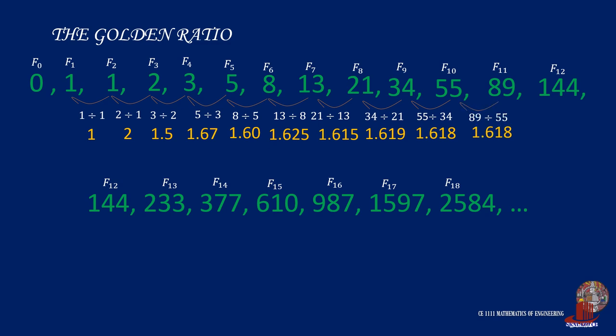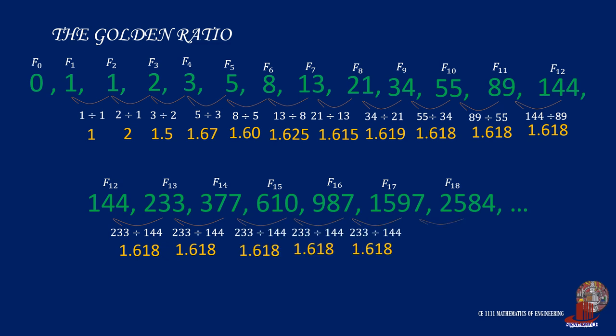Then 34 divided by 21 is 1.619. We keep taking the ratio from 55 divided by 34 as 1.618. Then 89 divided by 55 is 1.618. Now try the next 144 divided by 89, which is still 1.618. And even when we try computing throughout the rest of the sequence, the resulting ratio is 1.618. This constant ratio is termed as the golden ratio notated as phi. So phi is 1.618.